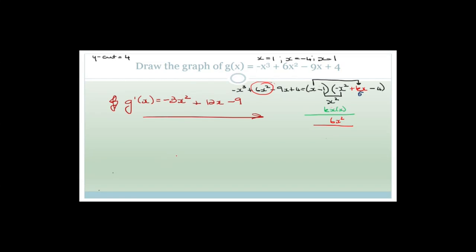Step one is to look at your equation. Here we've got g(x) = -x³ + 6x² - 9x + 4. What we know so far: the constant is 4, which means the y-intercept is 4. We also factorized this earlier and found the x-intercepts. Now we're trying to find the turning points. So we found g'(x) — the first derivative using the rule — is -3x² + 12x - 9.